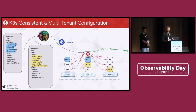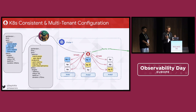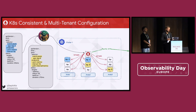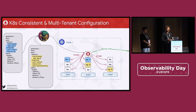On top of that, there is the possibility to propagate the status of the scrape back to the custom resource — like was it successful, how many targets were discovered. So for example, you can see the status field and immediately debug things without going to the UI or exposing sensitive information. It's way easier to use Prometheus and make Prometheus collection work in a shared environment.